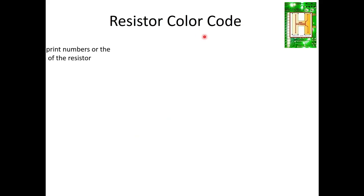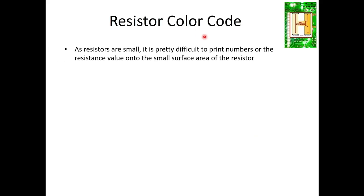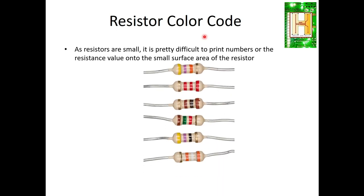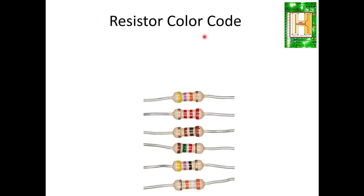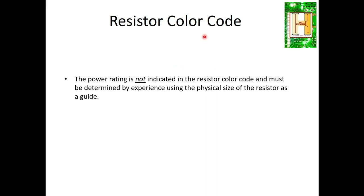Resistors are very small in size, and it is quite difficult to print the numerical value on the resistor surface. So resistors are identified with the help of a color band. There are different resistors with different color bands and different color coding. The power rating is never mentioned on the resistor color code — it can be determined with the help of experience by using the physical size of the resistor.